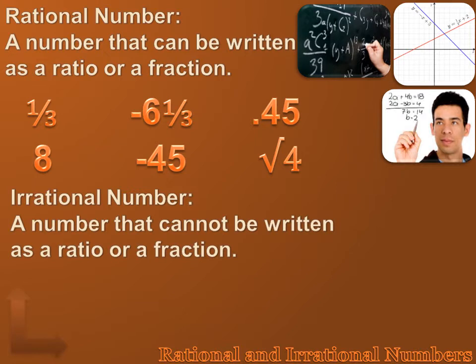Well, what's an irrational number? Real simply, an irrational number is a number that can't be written as a ratio or a fraction. The square root of two can't be written as a ratio or a fraction. It's a decimal. When you convert it to a decimal, it goes on forever. And it's not a repeating decimal.